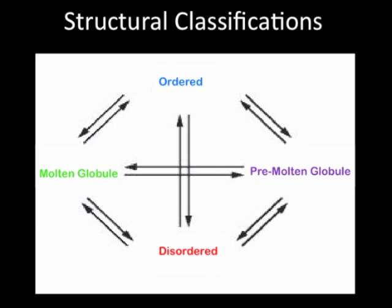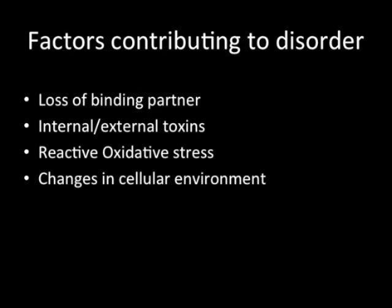The disordered state is the random coil, which is extended due to repulsion between the net charges on the residues. The molten globule is collapsed and has similar patterns of folding and secondary structure to ordered proteins. Ordered proteins are just a regular folded state, and the pre-molten globule is characterized by a not-defined tertiary structure.